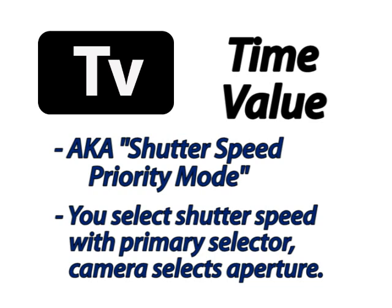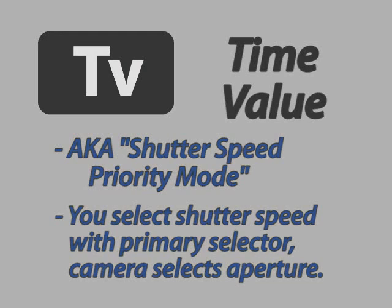For example, if you're at a football game, I would set mine at about 1/500th of a second. The camera will then make the adjustments for your aperture depending on how much light is coming into the camera. And it will always do this when you move from bright sunlight to shade or whatever — it's going to try to work that out for you so you don't have to worry about the aperture.